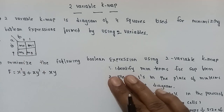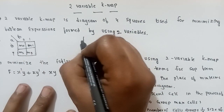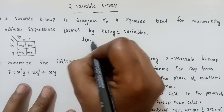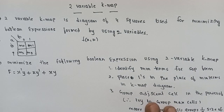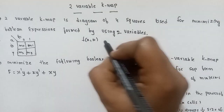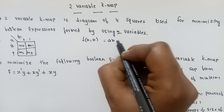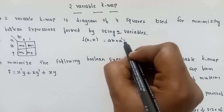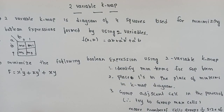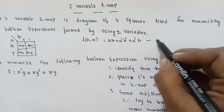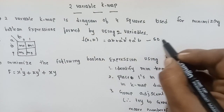Suppose we have two variables used to form Boolean expressions. For example: AB plus A'B' plus A'B. This is two variables used to form Boolean expressions, and this is the sum of products formula.